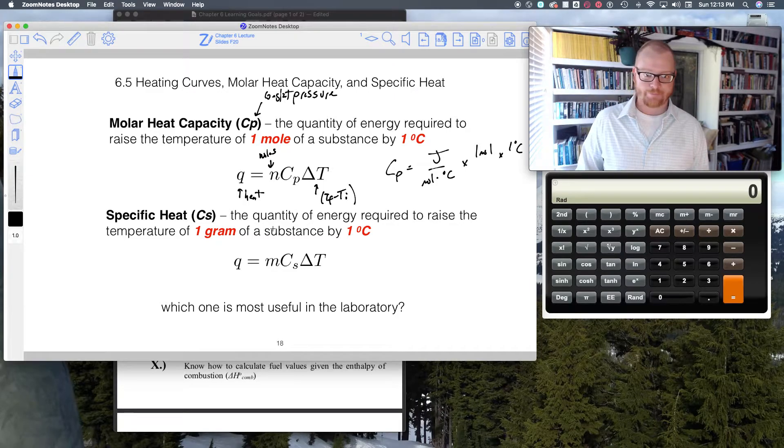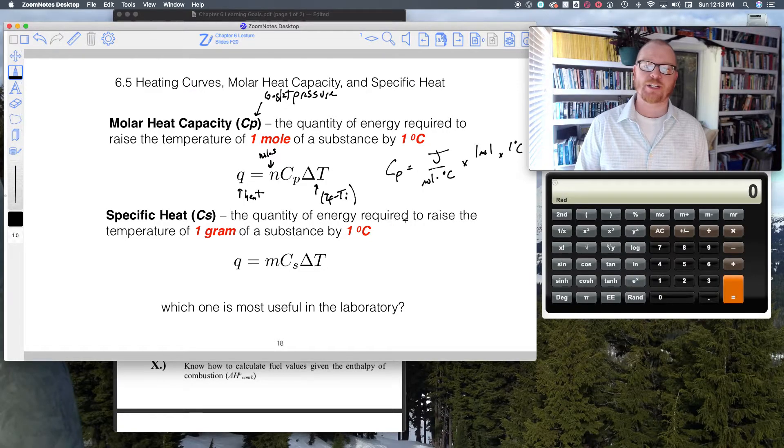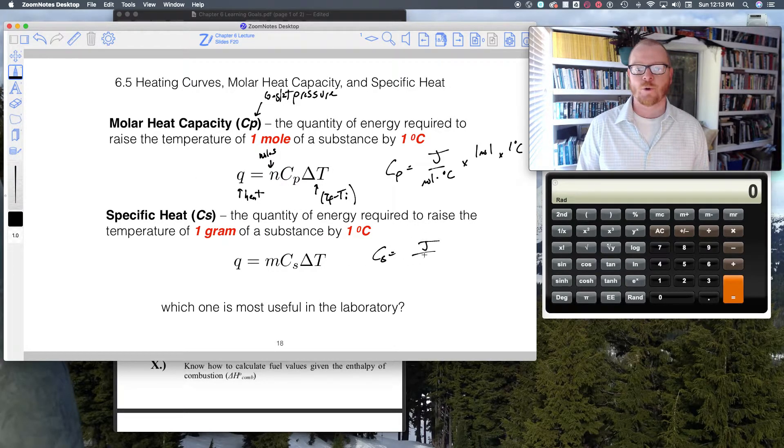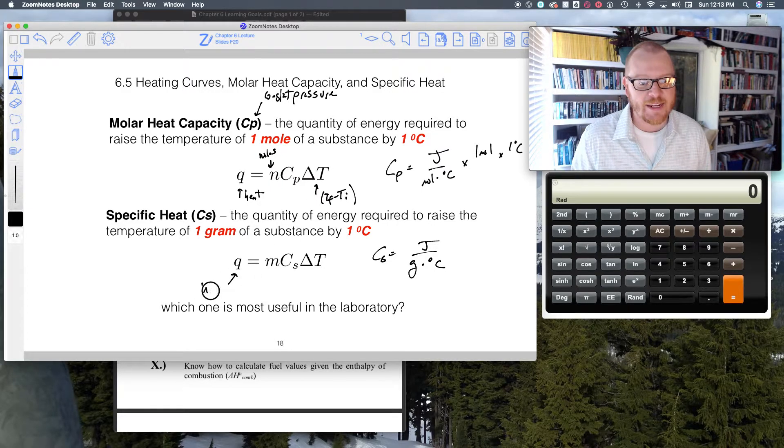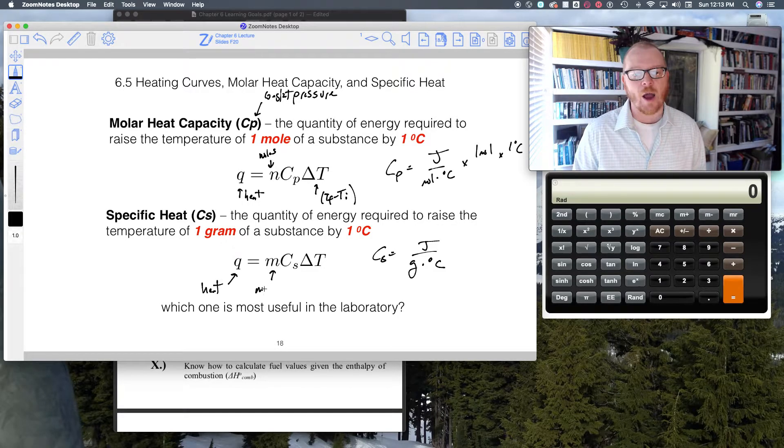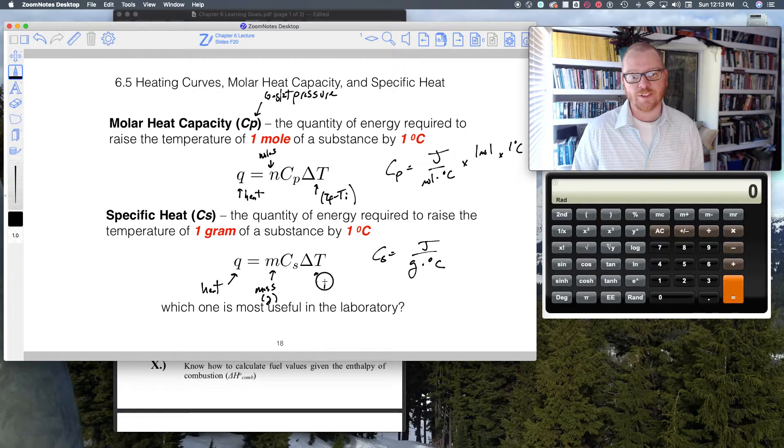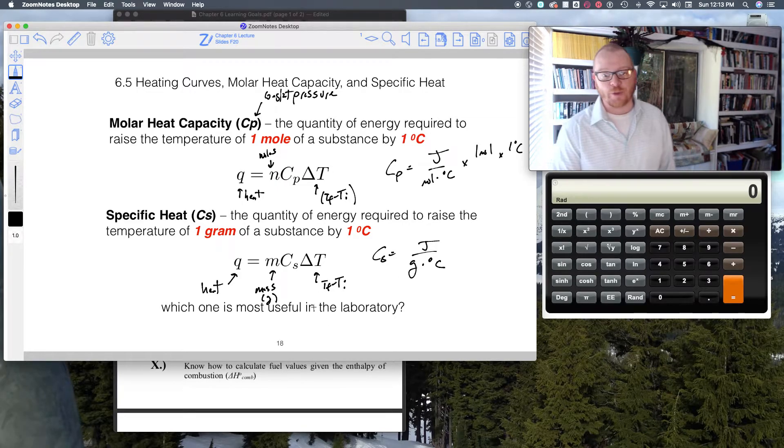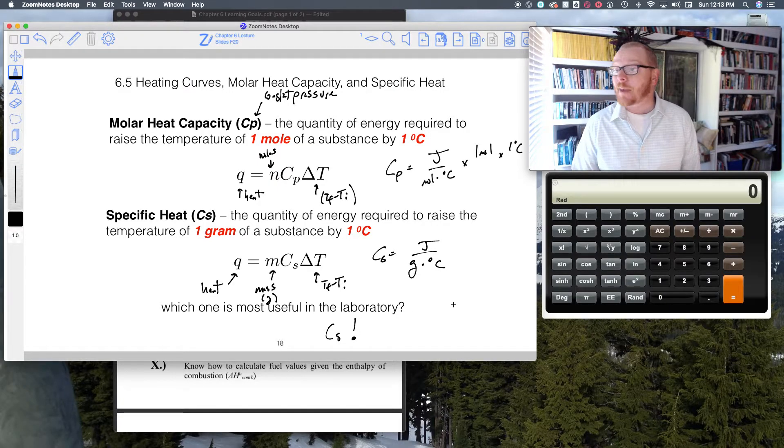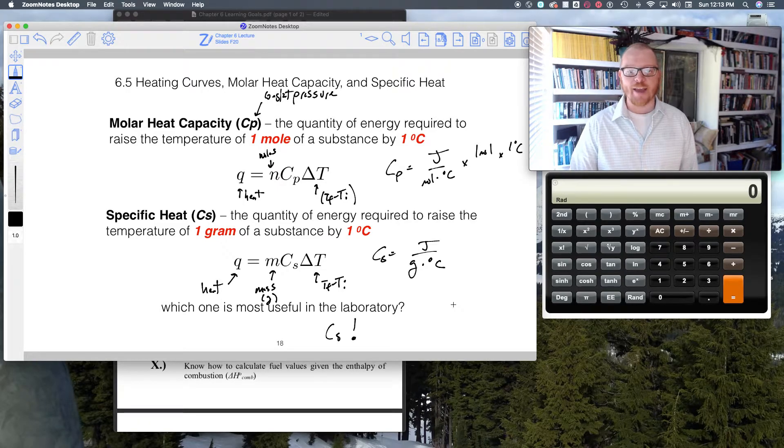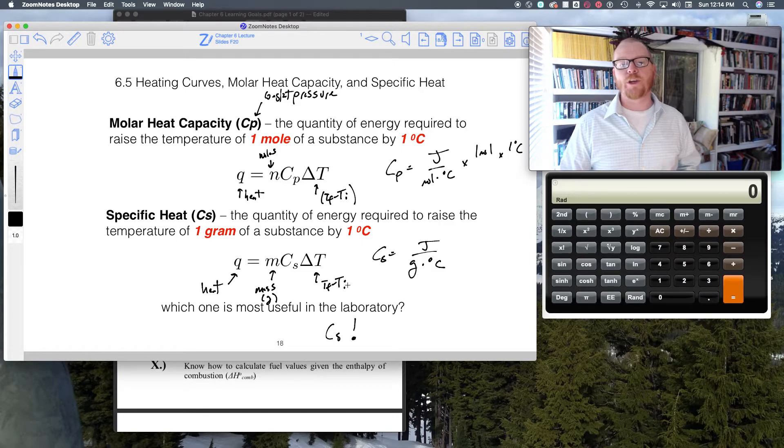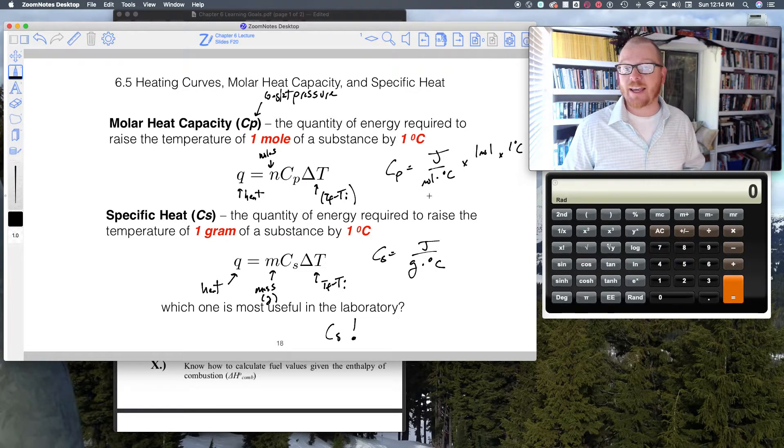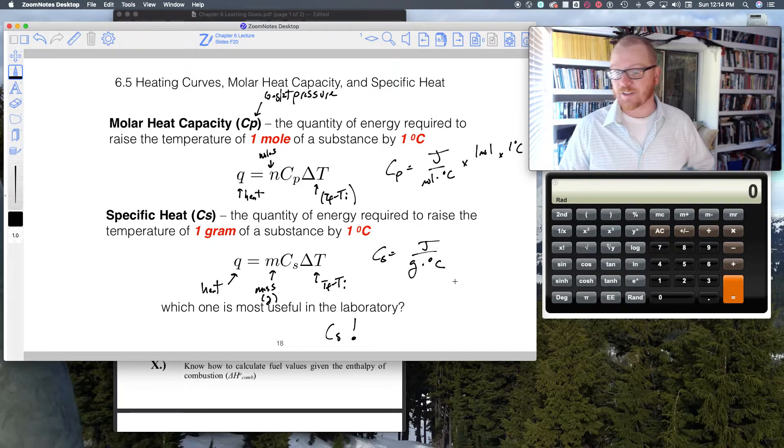Now what about specific heat? This is the quantity of energy needed to raise the temperature of one gram of substance by one degree C. Specific heat, Cs, has units of joules per gram per degree C. The equation is very similar; however, instead of moles it's now mass in grams, and of course this is still T final minus T initial. As far as which one's most useful in the laboratory, definitely Cs, because we don't have a mole-ohm-meter—we have a balance, something that gives us the grams of material, not the moles. We use Cs far more in the laboratory, but we should note that Cp and Cs can be interconverted to each other quite easily.